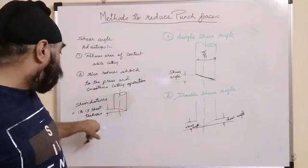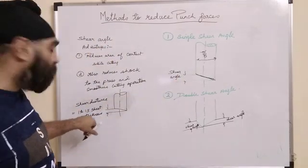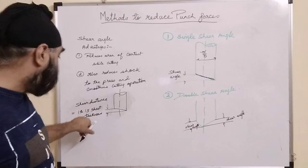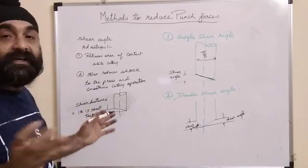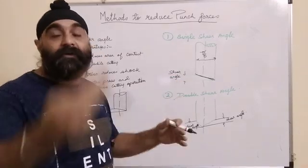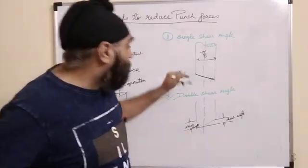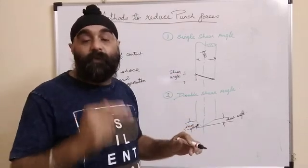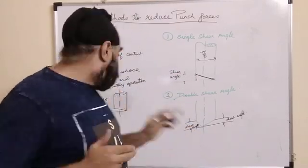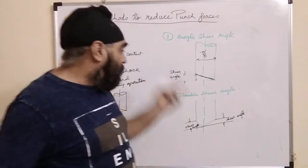How much angle should be given? The angle should be given such that shear distance is equal to 1 to 1.5 times the sheet thickness. You have to calculate the angle through reverse calculation so that this distance is not more than 1 to 1.5 times sheet thickness.